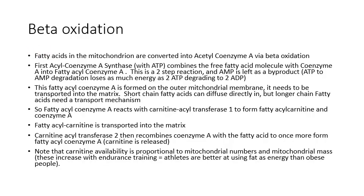We have a fatty acid in our mitochondrion and now we're going to go through a process called beta oxidation, whereby we break down this fatty acid into acetyl coenzyme A. If you remember, acetyl coenzyme A is a component of the Krebs cycle, so what we are basically doing is smashing fatty acid into acetyl coenzyme A and then donating acetyl coenzyme A to the Krebs cycle. I'm going to discuss how the beta oxidation process goes as if it were a recipe in a kitchen, and then we'll have a look at the flow diagram to review.